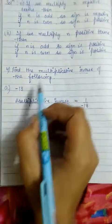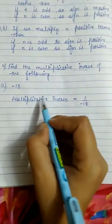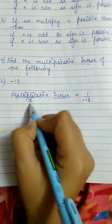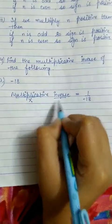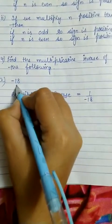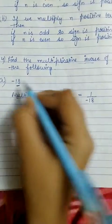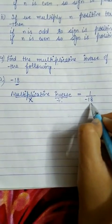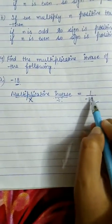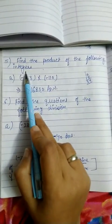Next question: find the multiplicative inverse of the following. We have to find the multiplicative inverse of the given integers. First question is minus 18. Multiplicative means multiply, and inverse means opposite — the opposite of multiply is divide. So we take the given term and flip it: 1 upon minus 18. The multiplicative inverse of minus 18 is 1 upon minus 18.